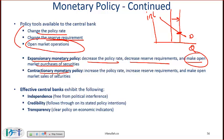A contractionary monetary policy is the opposite. The central bank makes open market sales of securities, which pulls money out of the system. The money supply moves left, which means that interest rates go up, and this slows down growth and cuts back inflation.